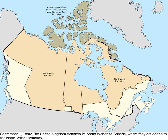Islands split between Nunavut and Northwest Territories include Victoria Island, Melville Island, Mackenzie King Island, and Borden Island. These islands were never part of Rupert's Land, which covered those parts of North America draining into Hudson Bay.